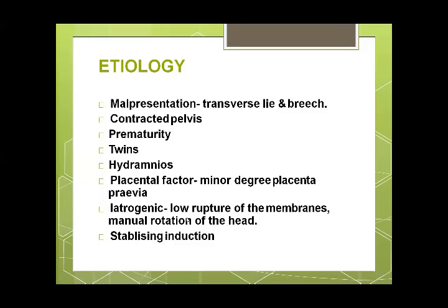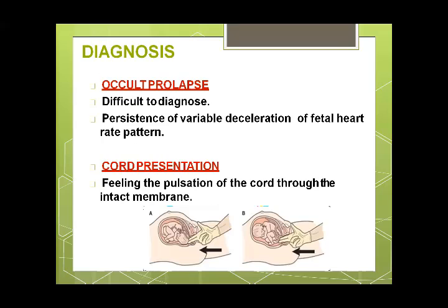Cord prolapse risk is also increased when artificial rupture of membranes is performed when the head is high or the presenting part is not snugly fitting the lower uterine segment, or when external cephalic version is done in the case of malpresentation. The diagnosis of cord presentation can be assessed on examination, but occult cord prolapse is more difficult to diagnose.